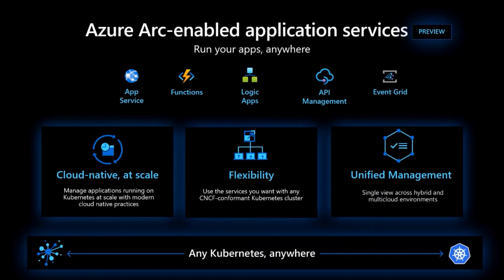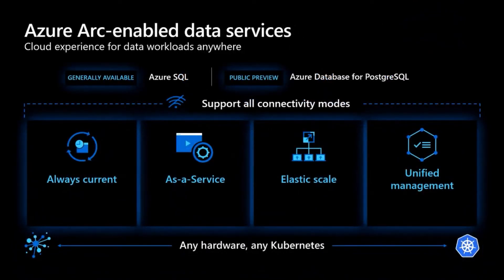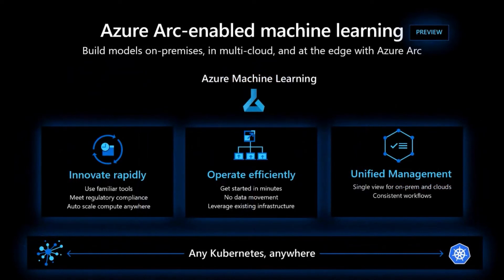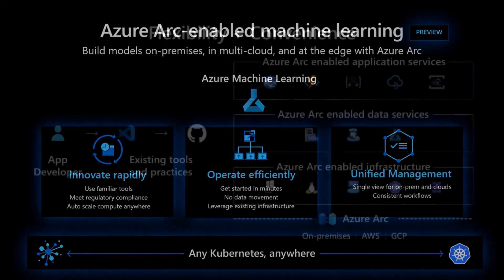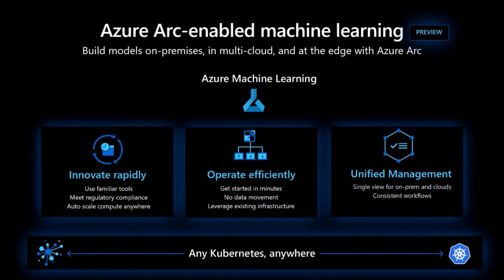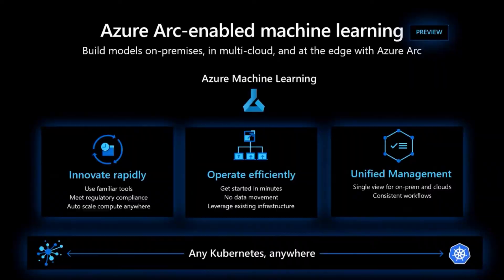Speaking of application services — you obviously also need databases. We have Azure SQL Managed Instance generally available as an Azure service running on-premises. It runs on a Kubernetes cluster, which can be AKS on-premises or other Kubernetes distributions. We also offer Azure Machine Learning as well. Obviously we're working on more services, but let me quickly show you how that looks in the Azure portal.